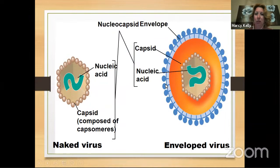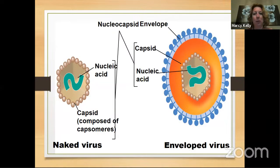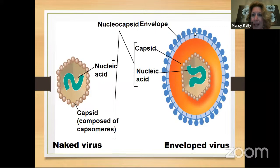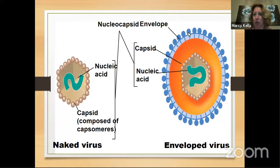This additional layer is actually derived from the cell membrane of a human cell. The virus hijacks a piece of the outer layer of a human cell and makes it its own outer layer. That's one way the virus can hide from our immune response — it coats itself with part of the outside of our cells. You'll notice this envelope has blue circles on it, which I'm sure you've seen in pictures of coronavirus. That's the spike protein.